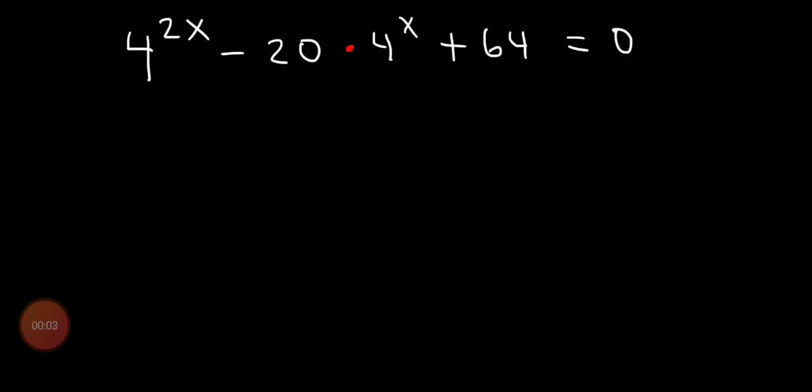In this lesson we are going to discuss exponential equations with 4^(2x) and 4^x. From these two values, we have to substitute with a single variable. Let's suppose 4^x is equal to a. Then after taking the square, we will get that 4^(2x) is equal to a squared.